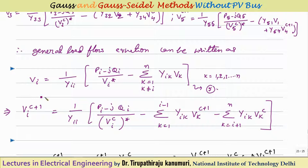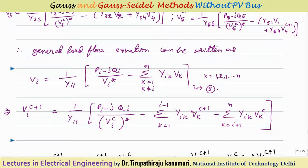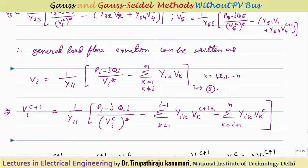The generalized Gauss-Seidel voltage update equation is: Vi(C+1) = (1/Yii)·{(Pi−jQi)/Vi(C)* − Σ(k=1 to i−1) Yik·Vk(C+1) − Σ(k=i+1 to n) Yik·Vk(C)}. Buses 1 to i−1 have already been updated in the current iteration so we use Vk(C+1), while buses i+1 to n have not yet been updated so we use Vk(C).